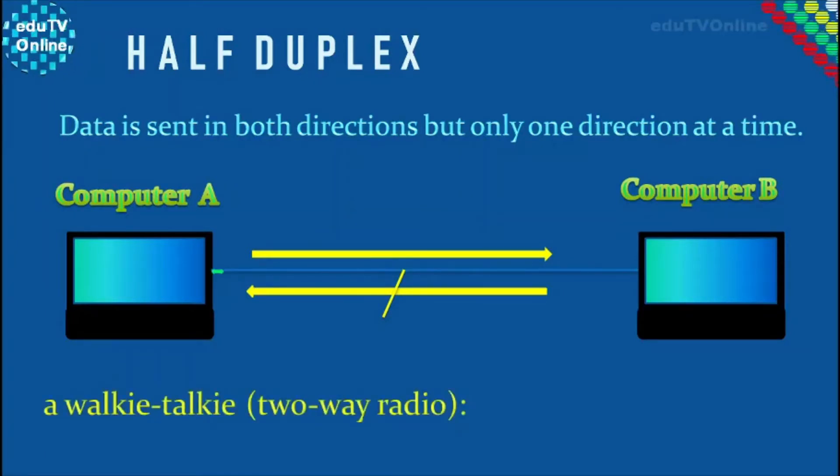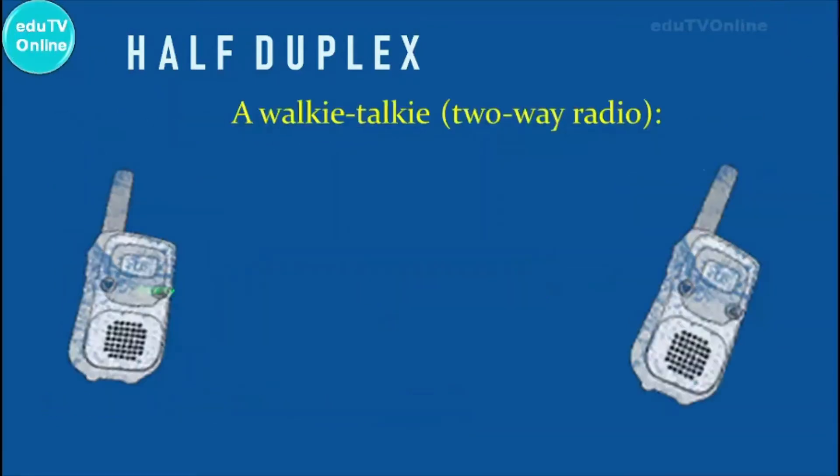An example of half duplex is just like how walkie talkies work. With walkie talkies, a person has to press a button if they want to talk to transmit their voice to the other person, and while the button is pressed, information is only going in one direction. So they can't hear the other person while they're transmitting their voice. They would have to release the button in order to receive the other person's transmission.